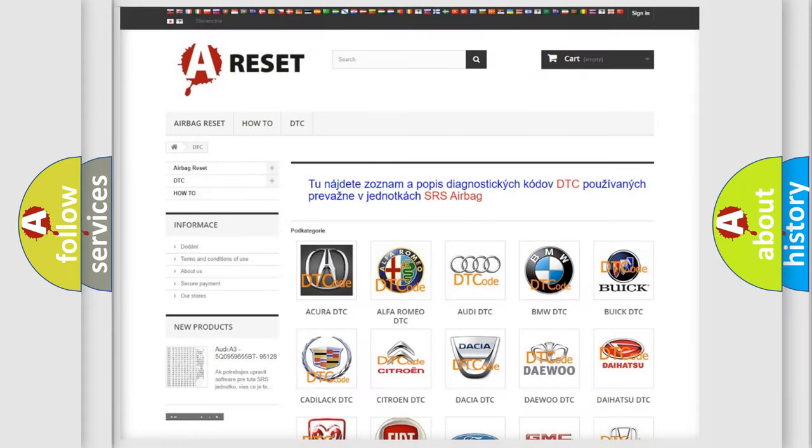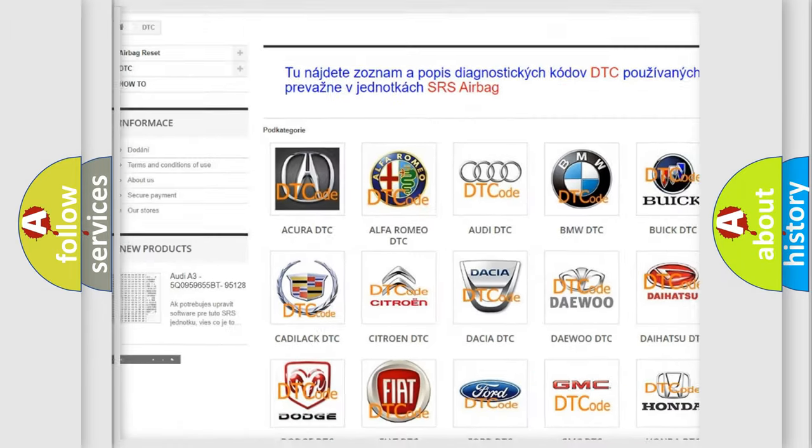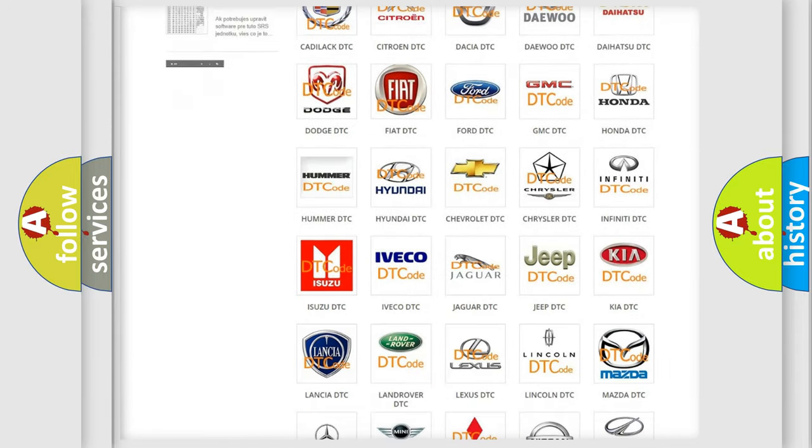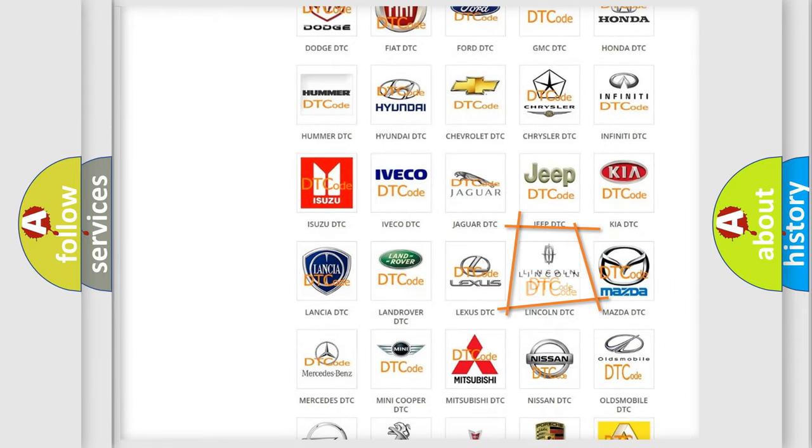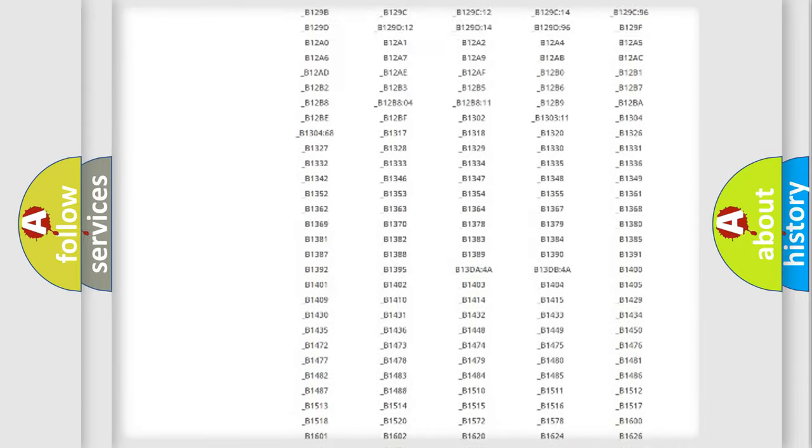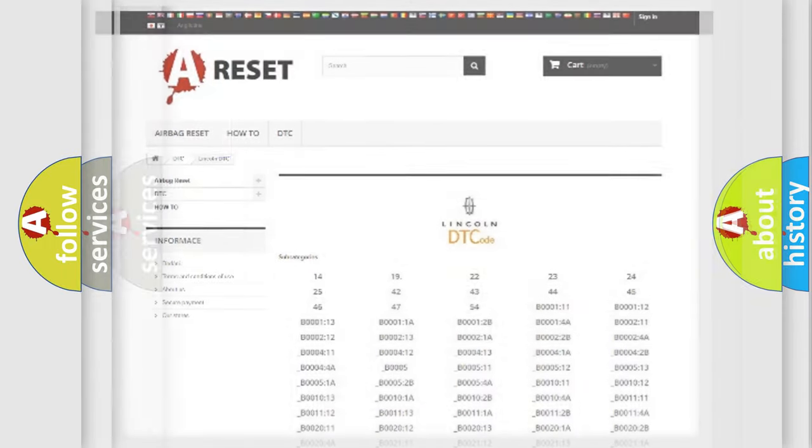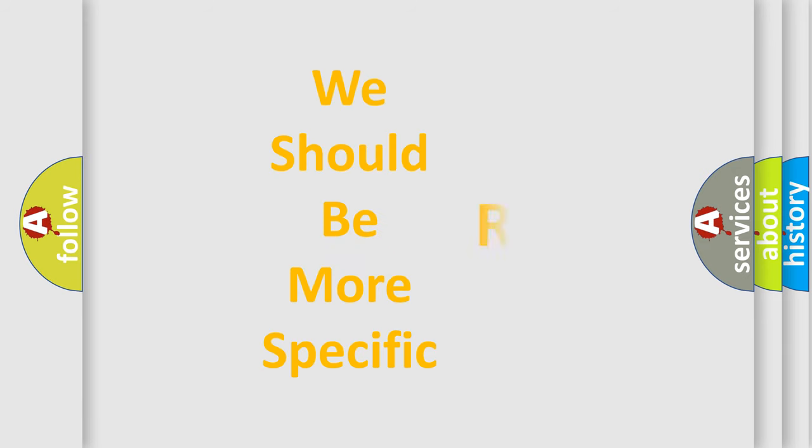Our website airbagreset.sk produces useful videos for you. You do not have to go through the OBD2 protocol anymore to know how to troubleshoot any car breakdown. You will find all the diagnostic codes that can be diagnosed in Lincoln vehicles, and many other useful things. The following demonstration will help you look into the world of software for car control units.